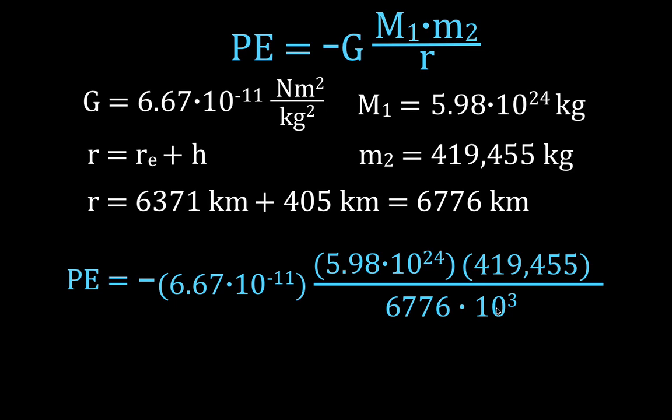Just do all of that math, multiply, multiply, multiply, divide, and you get that the potential energy is minus, don't forget the minus sign, 2.47 times 10 to the 13th joules. Okay, that's the value right there, that's all there is to it.